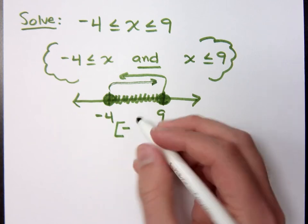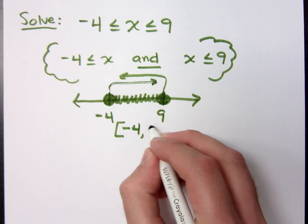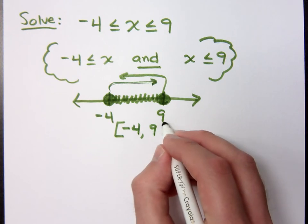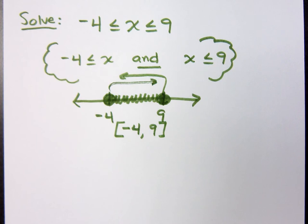Bracket bracket, negative 4 to positive 9, bracket bracket.